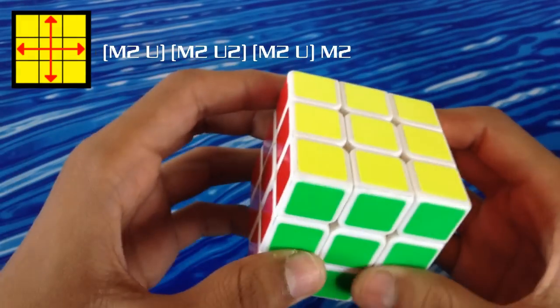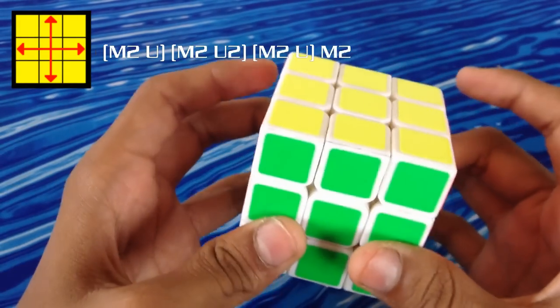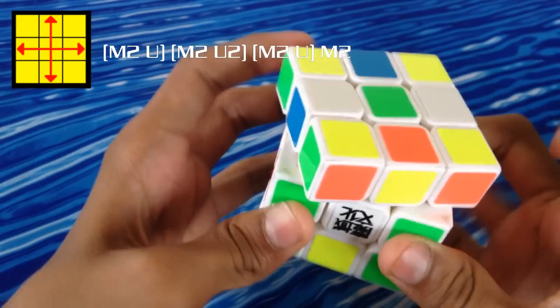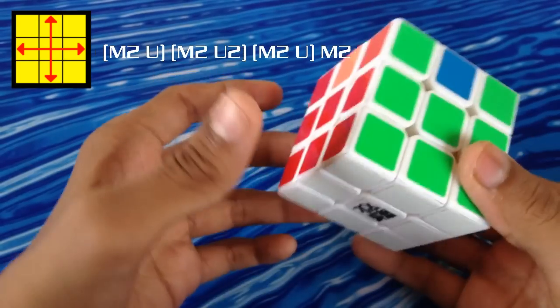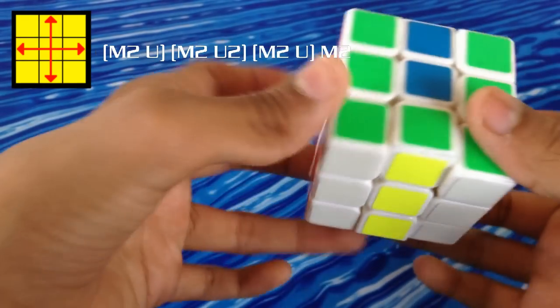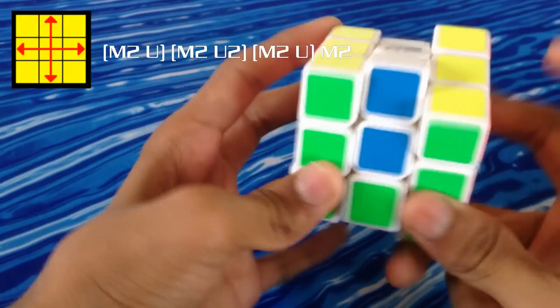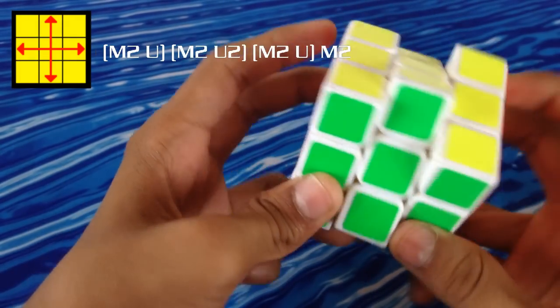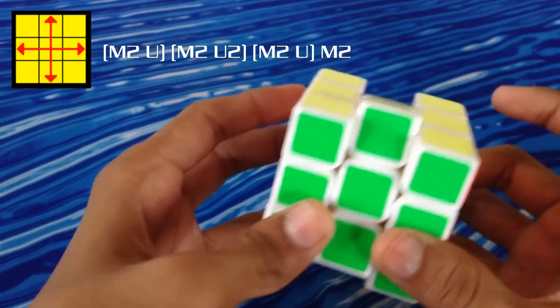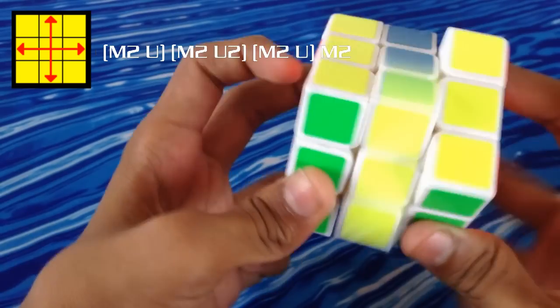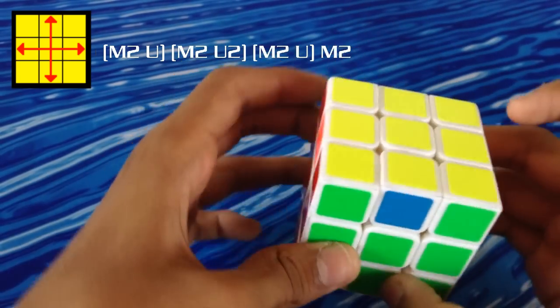At the number 1 easiest we have the H permutation which is just this. All you have to do is do an M2 slice. Notice how I'm putting this finger first and this one immediately to create an M2. That's how you do it. Let me show you one more time. With some practice you can master this.